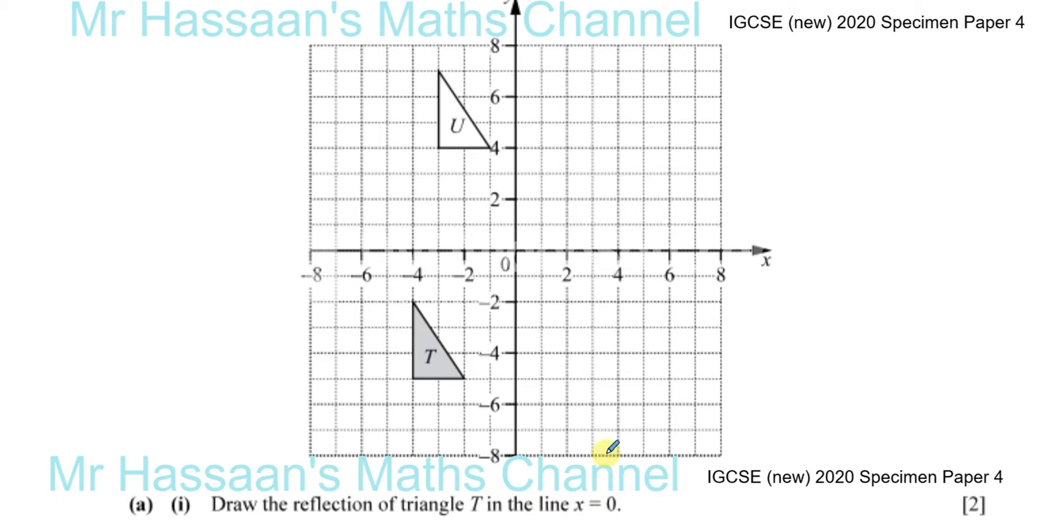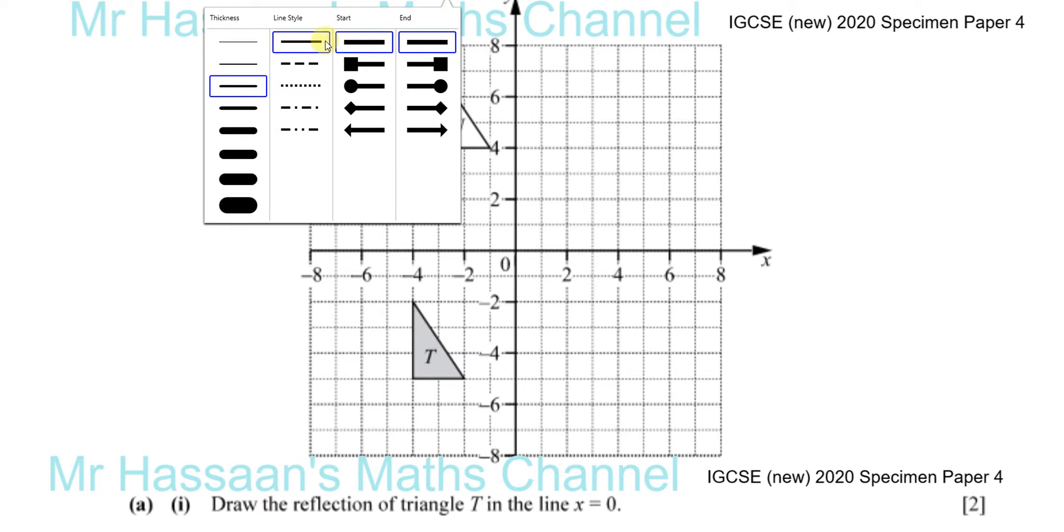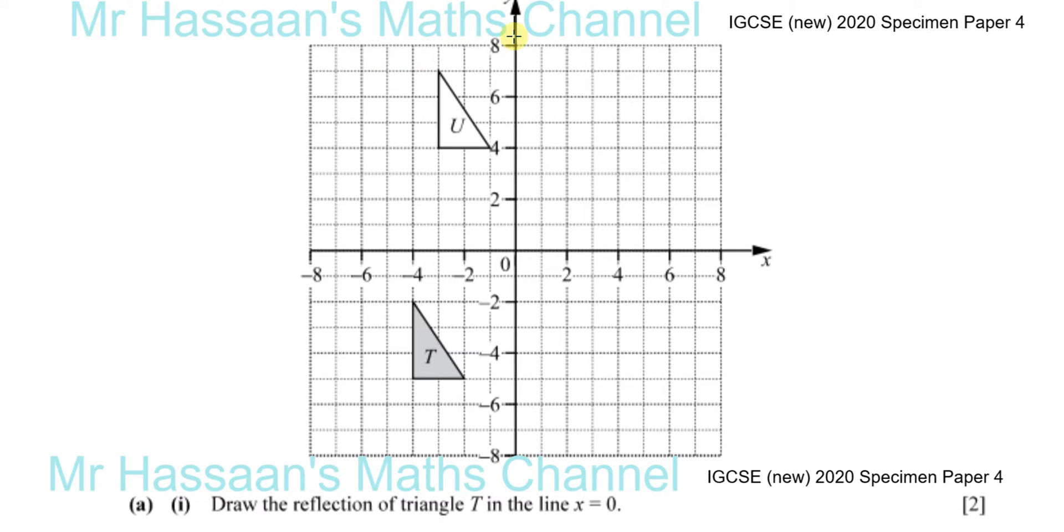The line X equals zero, a lot of people are confused about where that line is. The line X equals zero is a line where every single point on that line X is equal to zero. And that is the Y axis. All the coordinates on the Y axis start off with zero, zero, zero eight, zero six, zero four. The X value is zero. If I was to tell you to draw the line X equals two, you draw a vertical line going through two on the X axis. So the same thing for X equals zero. It's a vertical line going through zero on the X axis, which is basically, it's the Y axis itself.